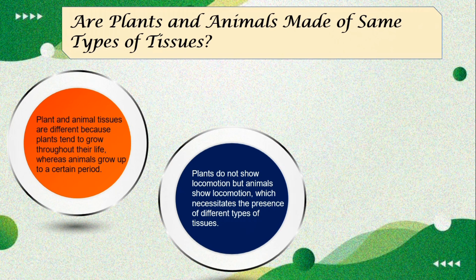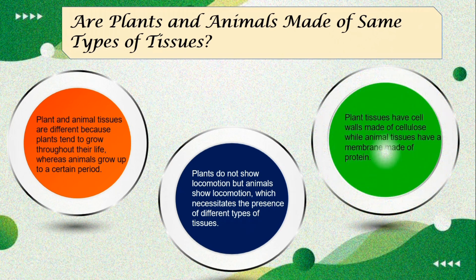The third difference is that plant tissues have cell walls made of cellulose, while animal tissues have a membrane that is made up of protein. So these are some of the differences between plant tissues and animal tissues.